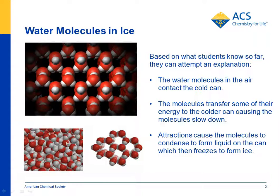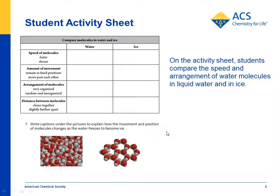We show kids that water molecules are close together in liquid water and further apart as solid ice. On the student activity sheet, we want students to compare water and ice in different ways: the speed of the molecules — moving more slowly in ice than in water — they'll be vibrating in fixed positions in ice because they're in a crystal. The arrangement of the molecules is different in water and in ice, and there are pictures on the student activity sheet for students to write captions under to explain these characteristics.